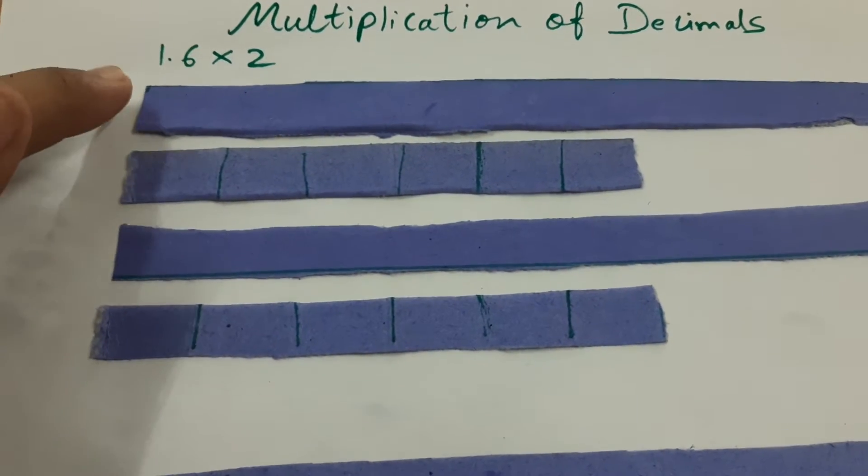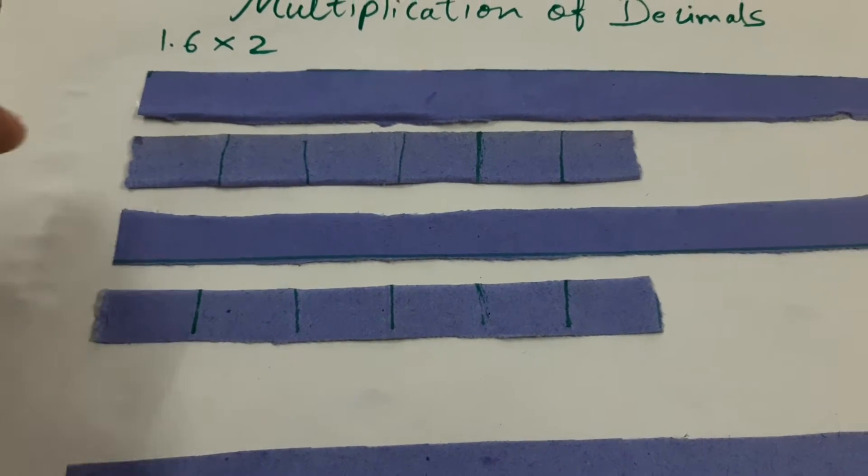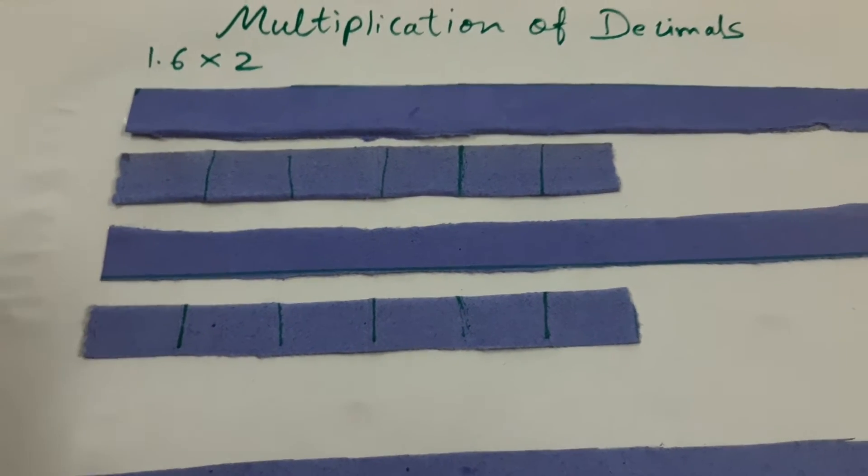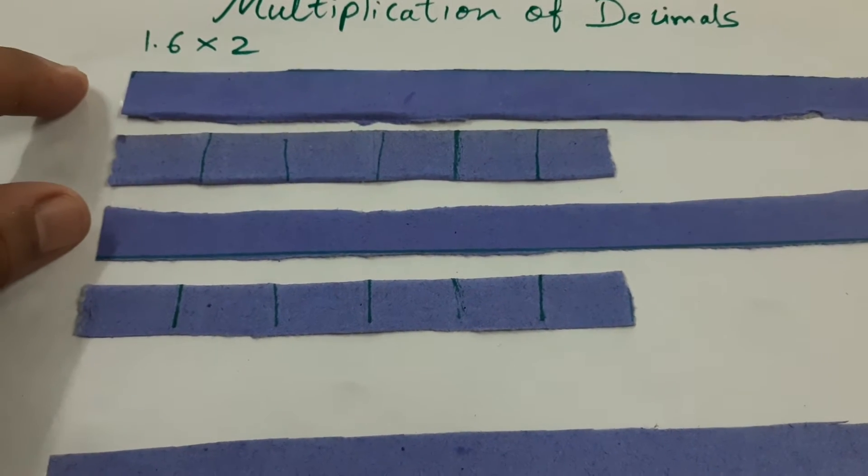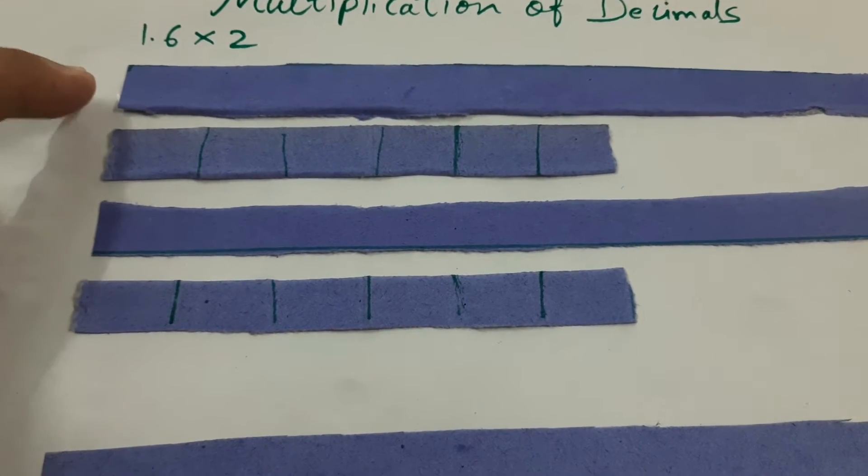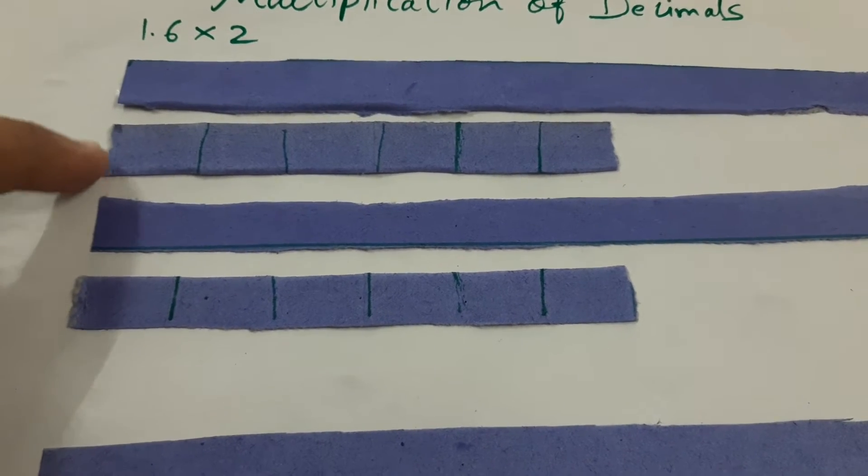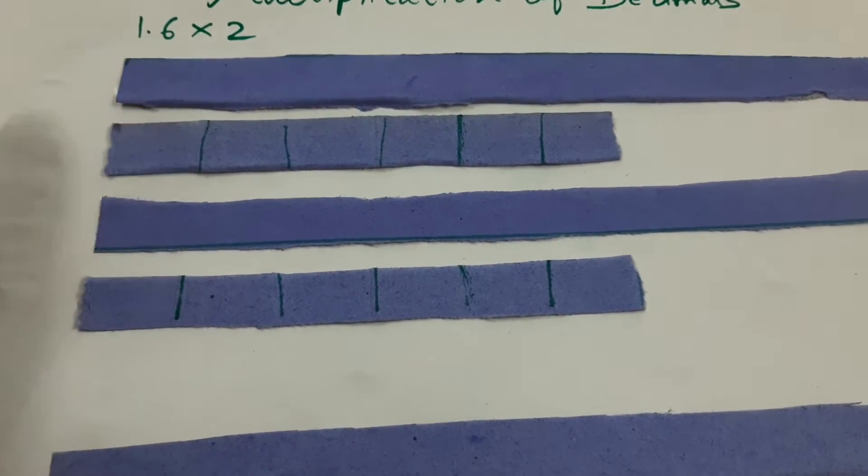Here we are using 1.6 into 2. So I have taken two strips of equal length 20 centimeter which I am considering as 1. So this is 1 and when we do 10 equal parts because 6 is in the 10th place.